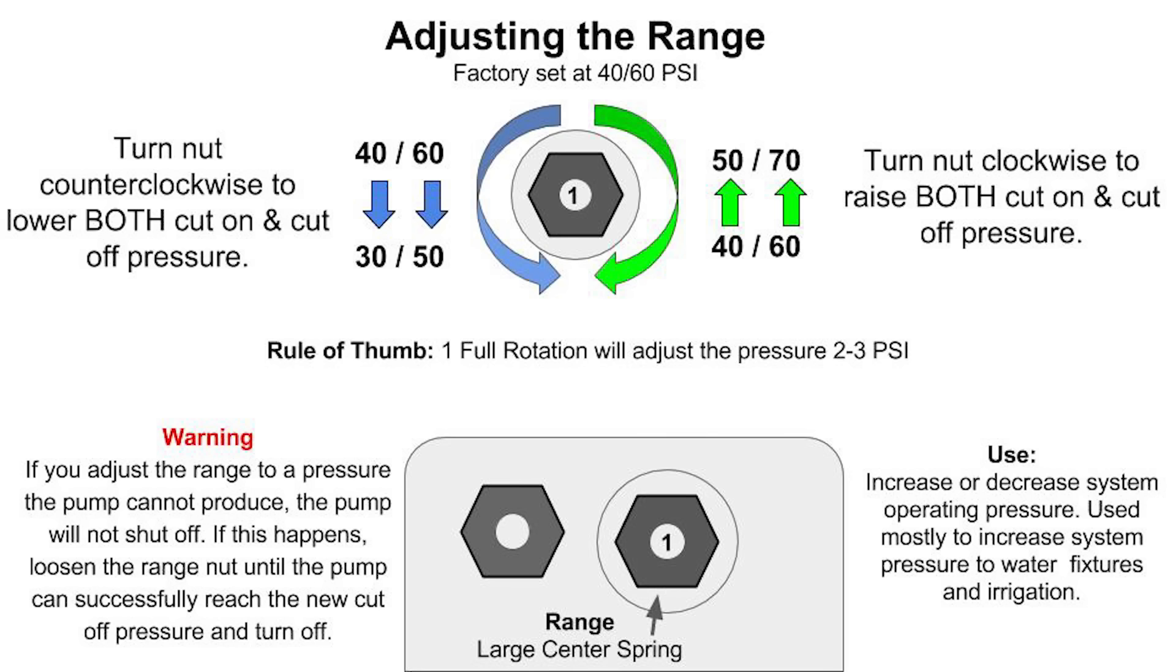Here's a quick recap of the range. This is the adjustable center nut on the pressure switch. Turn clockwise to increase both the cut on and off pressure. Turn counterclockwise for a lower cut on and off pressure.